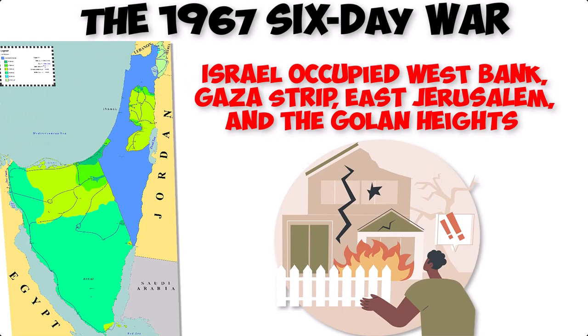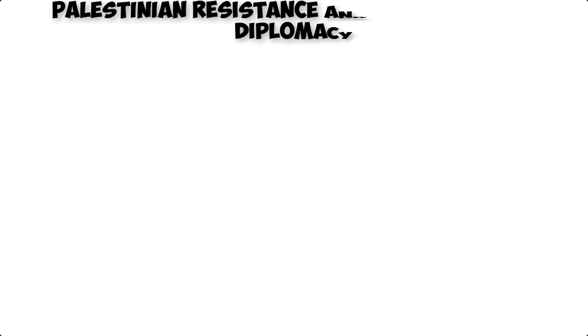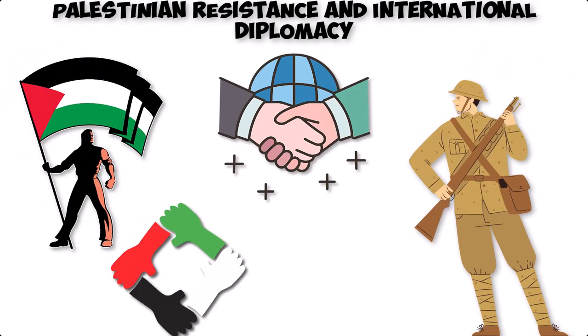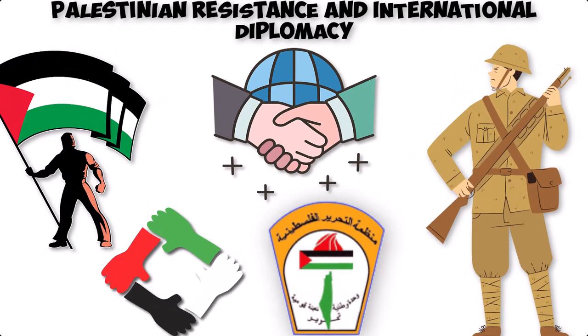The book explores the various forms of Palestinian resistance, including armed struggle, diplomacy, and international solidarity efforts. Khalidi examines the rise of the Palestine Liberation Organization (PLO) and its changing strategies over time.